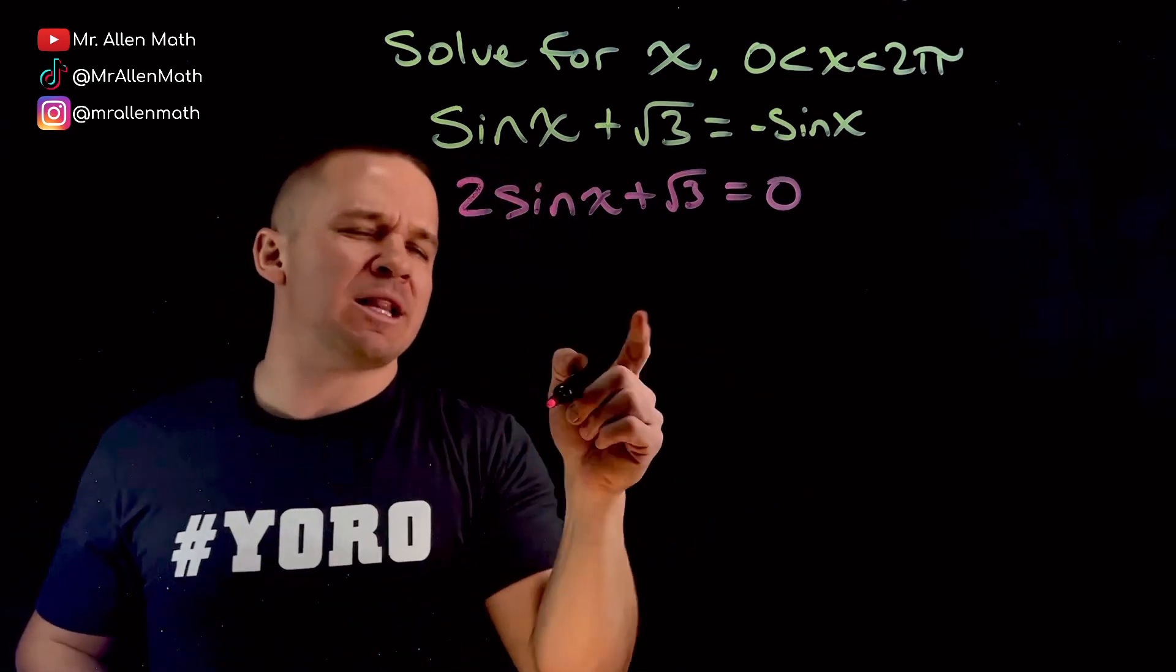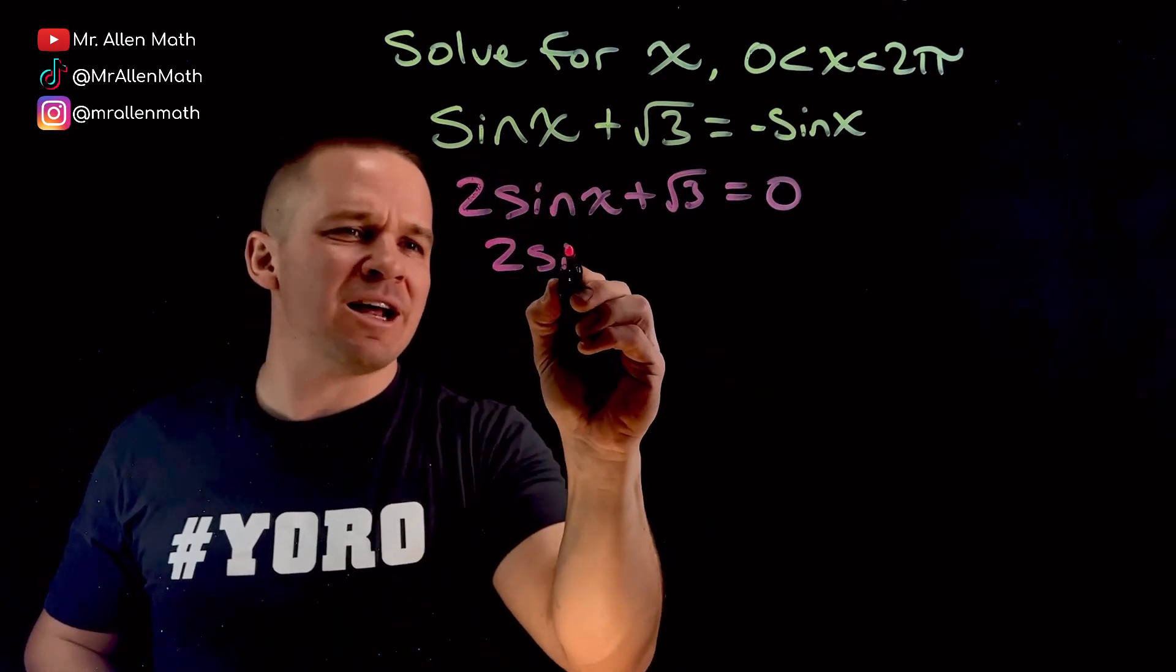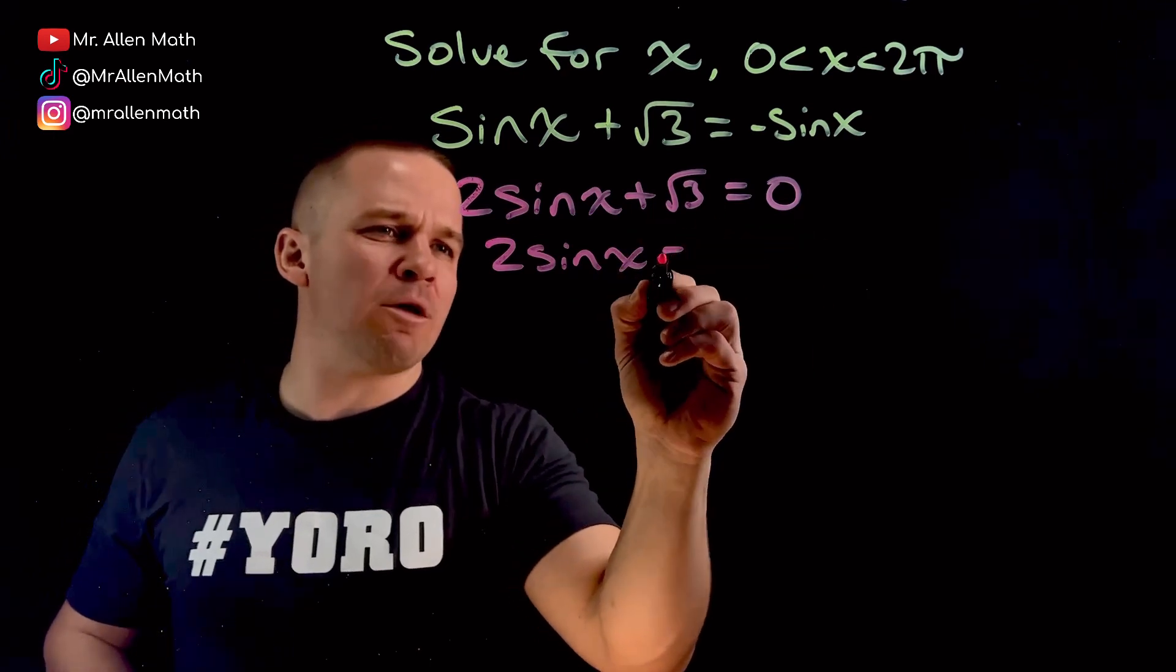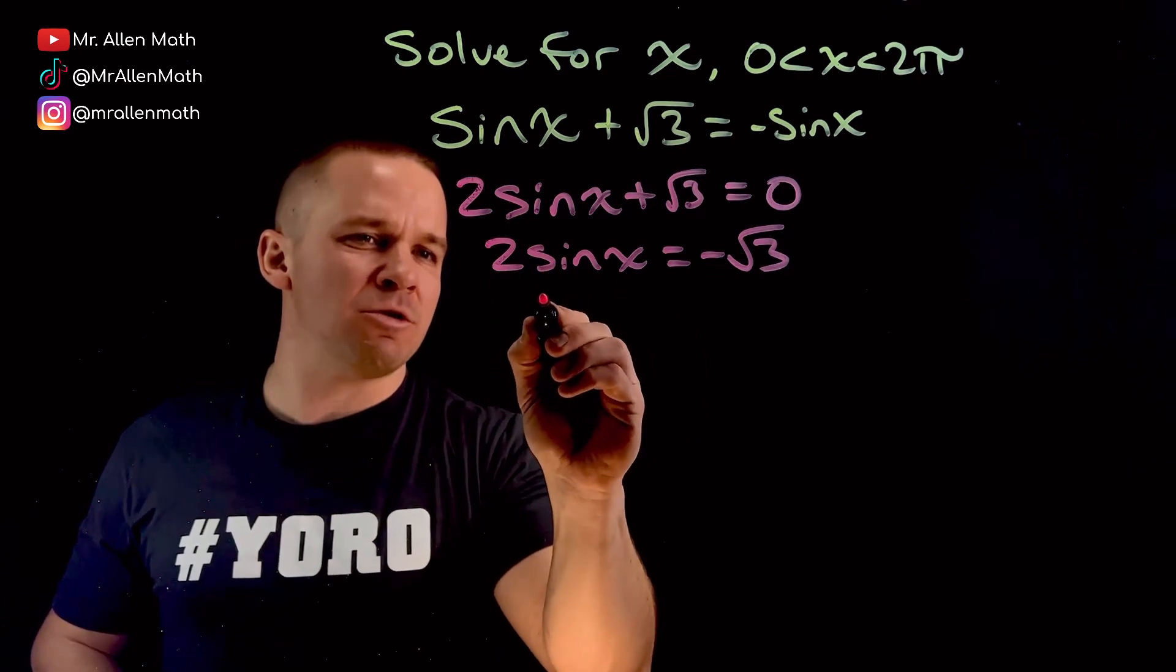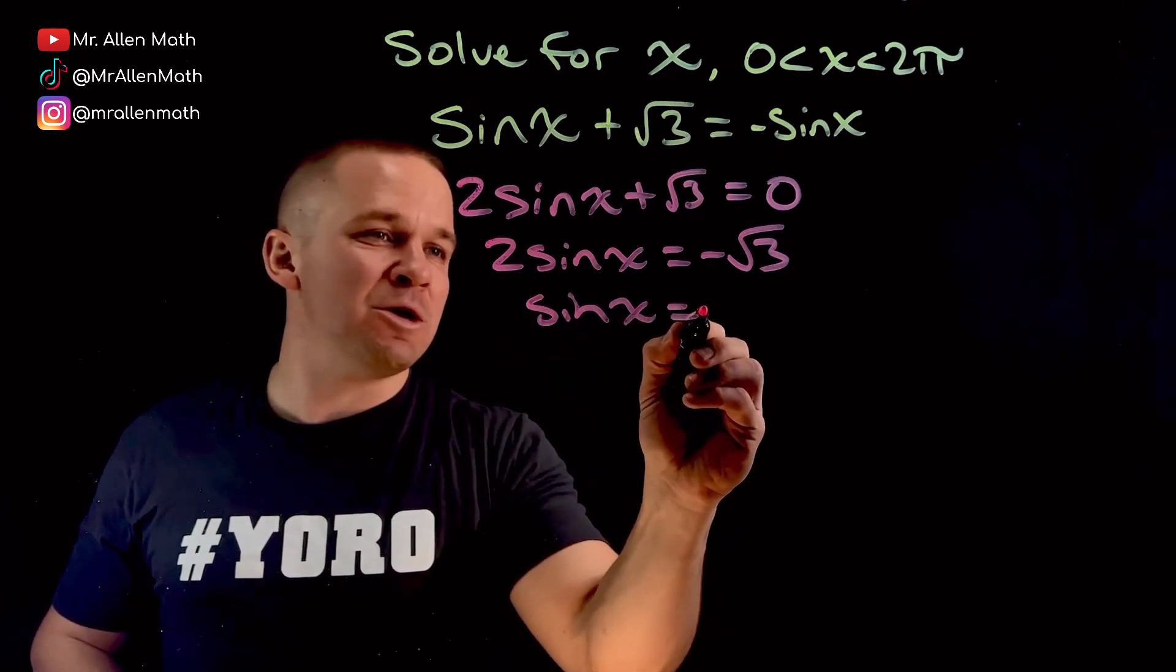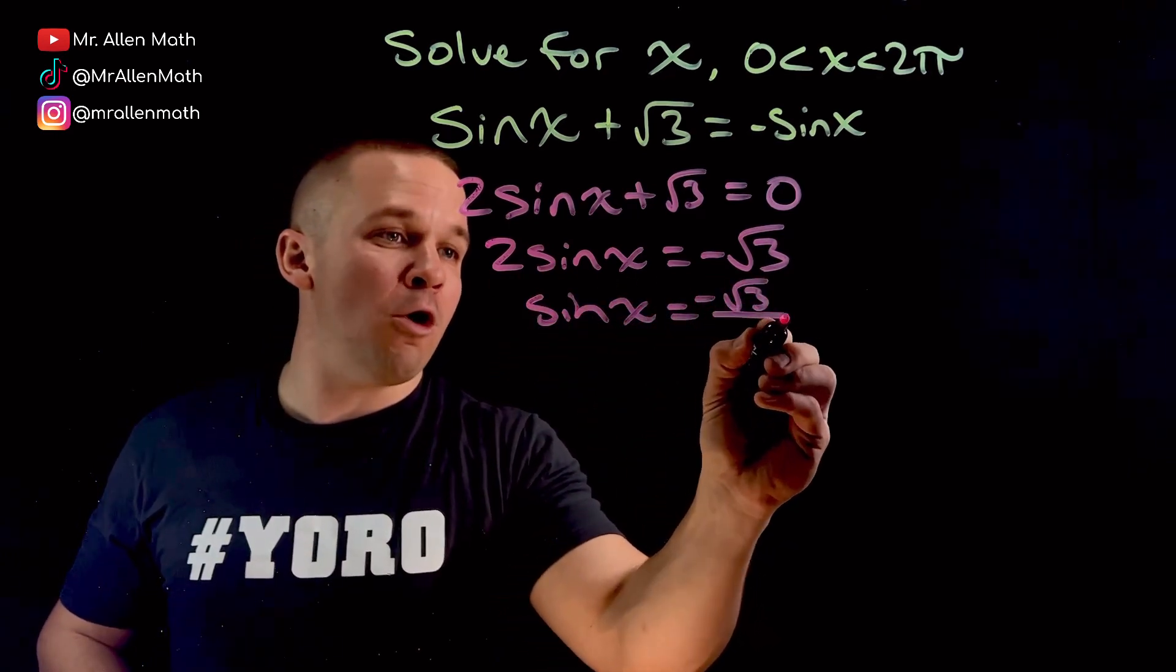It's pretty straightforward in that regard. So we get 2 sine of x. Let's subtract that root 3 so we get negative root 3 over here. And now to get sine alone, I'm going to divide by 2 and I'll get sine of x equals negative root 3 over 2.